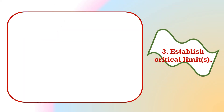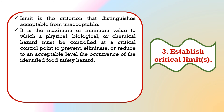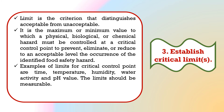The third principle is to establish critical limits. A limit is the criteria that distinguishes acceptable from unacceptable. It is the maximum or minimum value to which a hazard must be controlled at a critical control point to prevent, eliminate or reduce to an acceptable level the occurrence of the identified food safety hazard. Critical limits include values such as time, temperature, humidity or pH. In short, limits should be measurable. In some cases, more than one critical limit is needed to control a particular hazard.